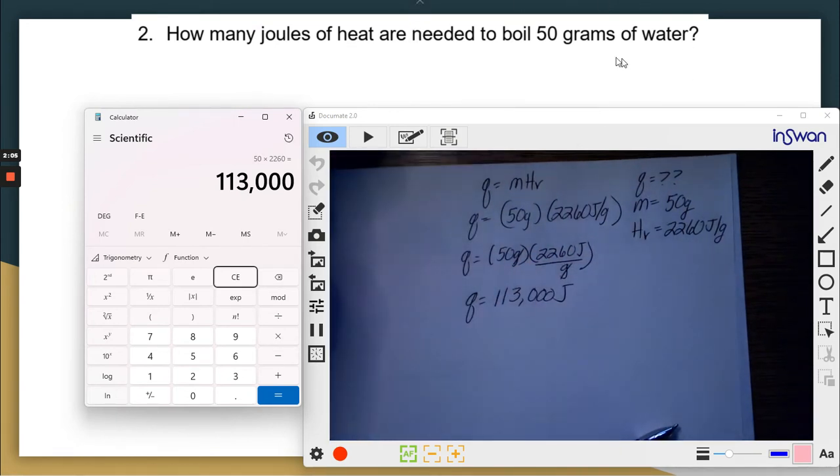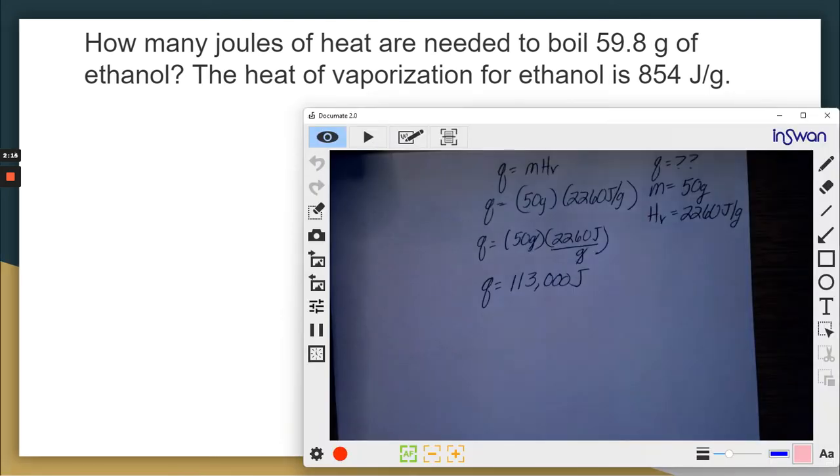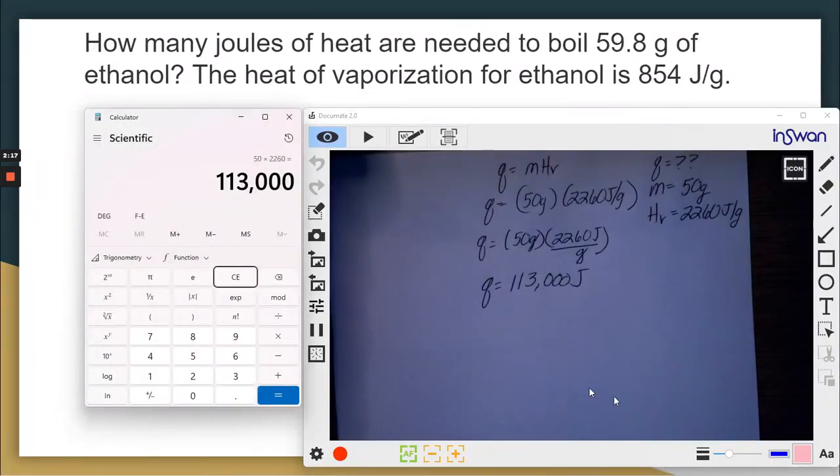How many joules of heat are needed to boil 59.8 grams of ethanol? And it gives us the heat of vaporization. Why does it have to give us the heat of vaporization? Well, because it wasn't water. My reference table only gives me the heat of vaporization of water.